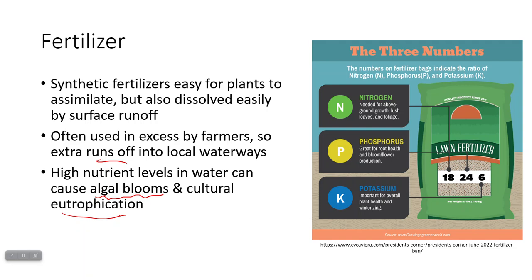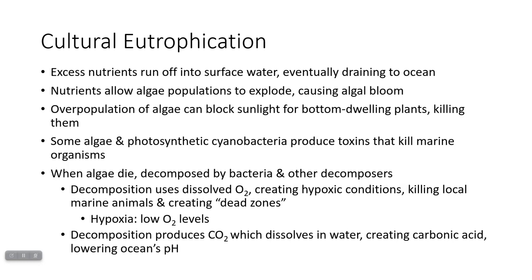If you've ever looked at fertilizer and wondered about the numbers on the front, they tell you the relative amounts of nitrogen, phosphorus, and potassium. Now, eutrophication is a huge impact of farming. Nutrients run off into surface water, and eventually all water leads to the ocean. Nutrients are a limiting factor for marine ecosystems, so when there's an influx of nutrients, the algae population just explodes — causing an algal bloom.